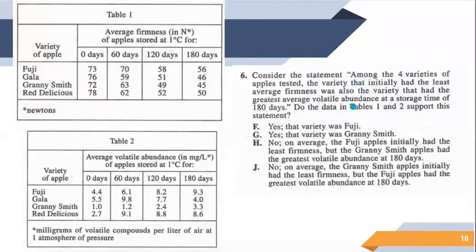Question six is the only question that asks about both tables one and two — that's why I saved it for last. It's going to be the hardest and will take the most time. If you were running short on time, skip this one and come back, since all ACT science questions are equally weighted. The answer should be J. The variety with the least initial average firmness — Granny Smith — did not have the greatest volatile abundance at 180 days, making that statement false.